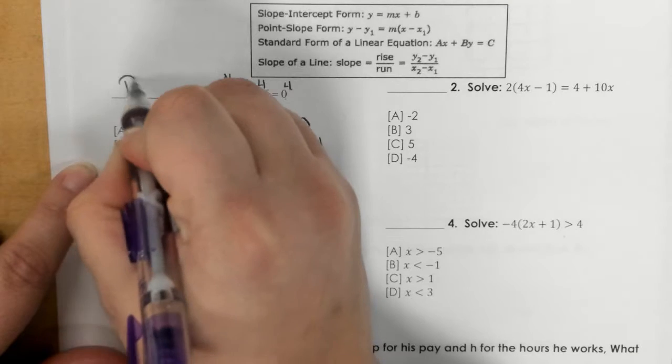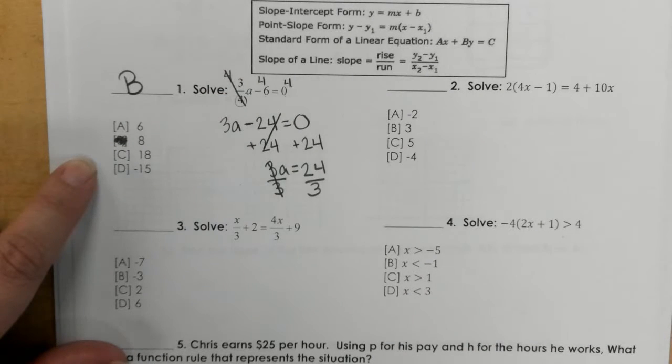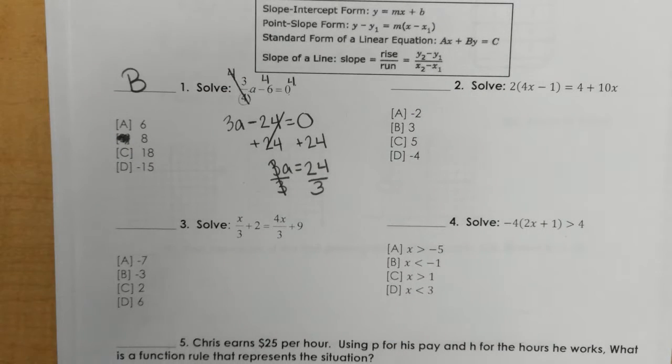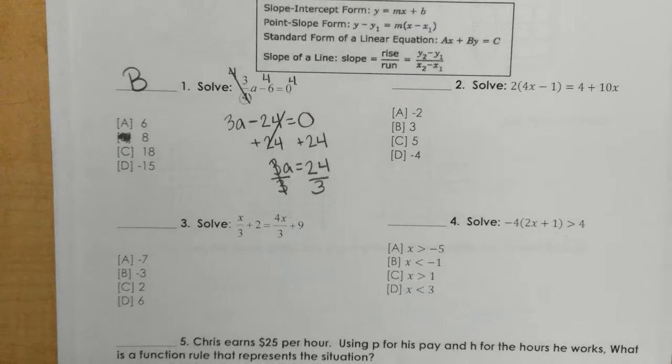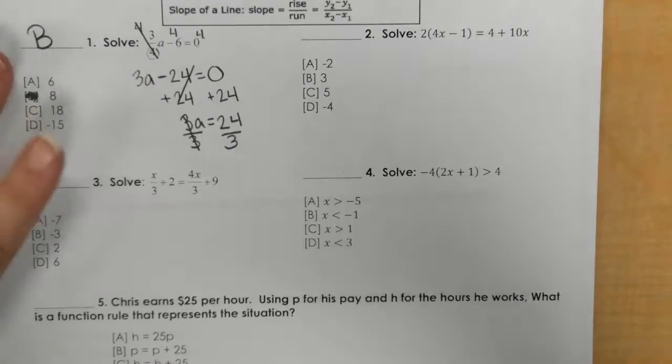I divide both sides by 3 and I see that 24 divided by 3 is 8. So my answer for number one would be letter B, a equals 8.